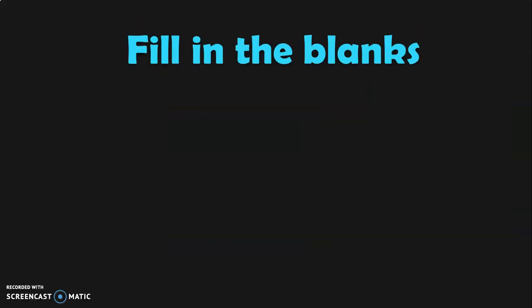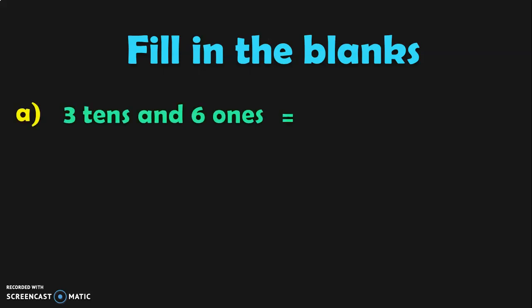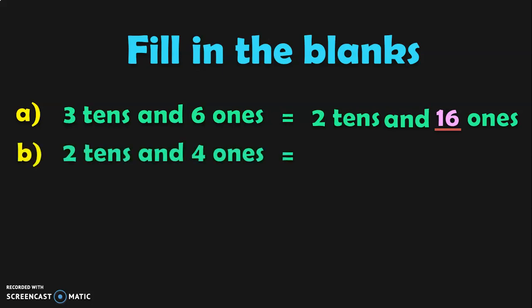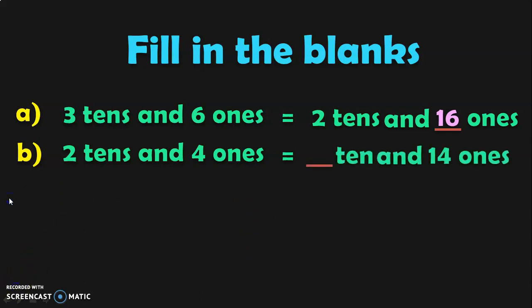Let us do another set of examples. Fill in the blanks. Three tens and six ones is equal to two tens and how many ones? The answer is sixteen ones. Two tens and four ones is equal to how many tens and fourteen ones? The answer is one ten and fourteen ones.